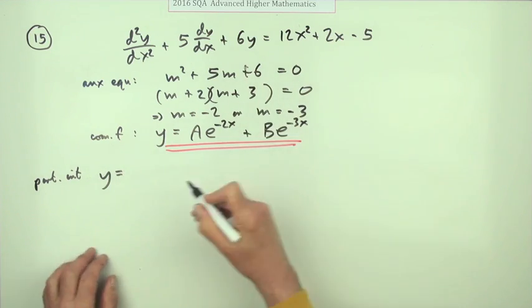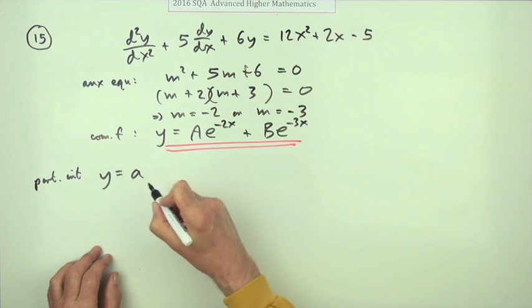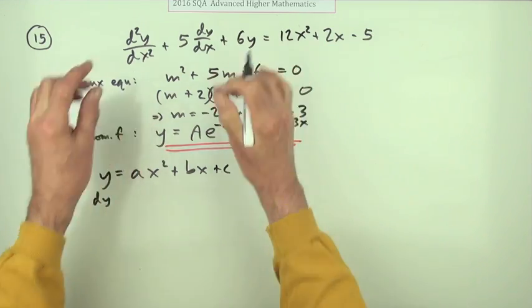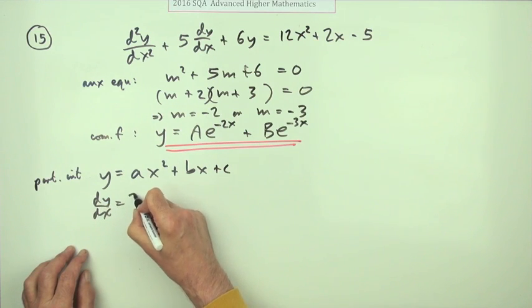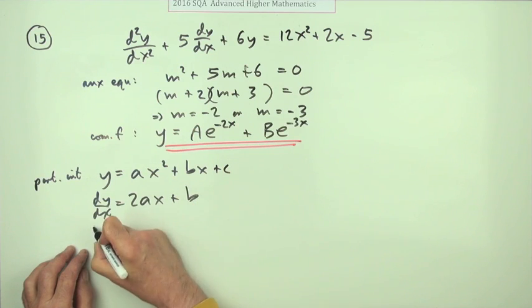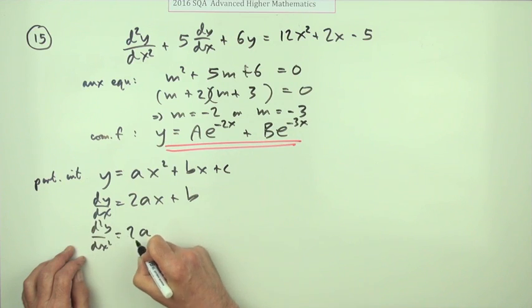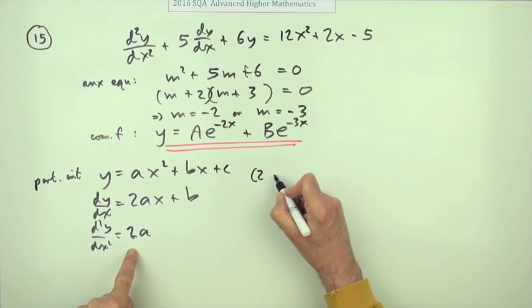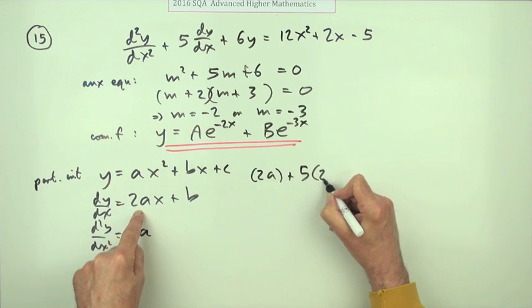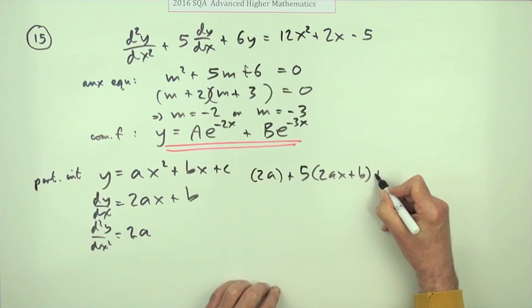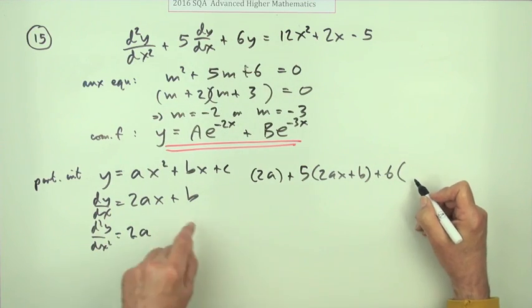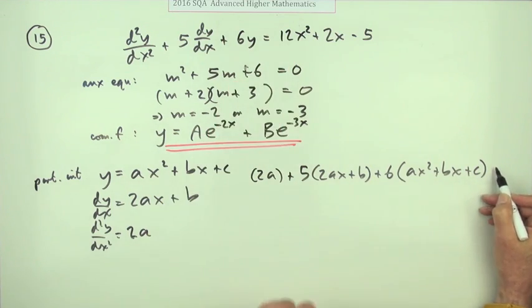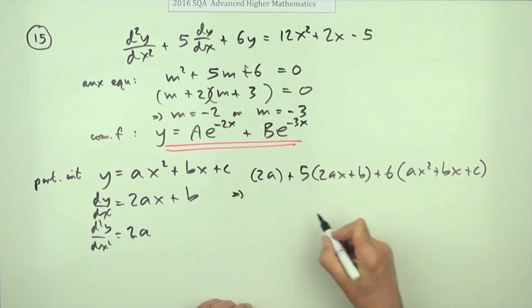And the obvious one to try is another quadratic. I'm going to use a, b, and c, but I'll use lowercase letters so there's no conflict. ax squared plus bx plus c. If I want to feed that in, I'll need both derivatives. dy by dx will be 2ax plus b. And the second derivative will just be 2a. Now I'm going to feed it in. So I want just one of them.